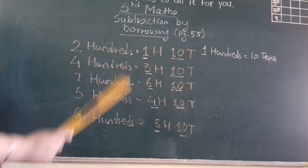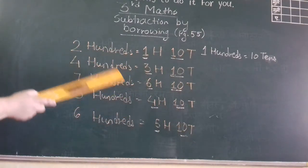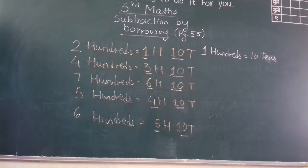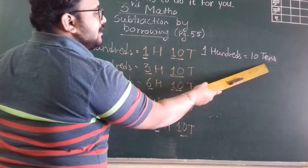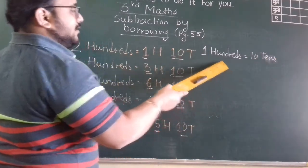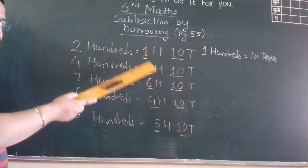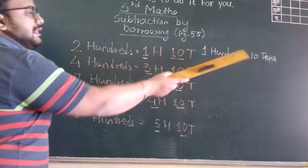Two hundreds. Two hundred means one hundred and ten tens. Now see. Ten tens means one hundred. Now have one hundred already. But tens more than ten tens.